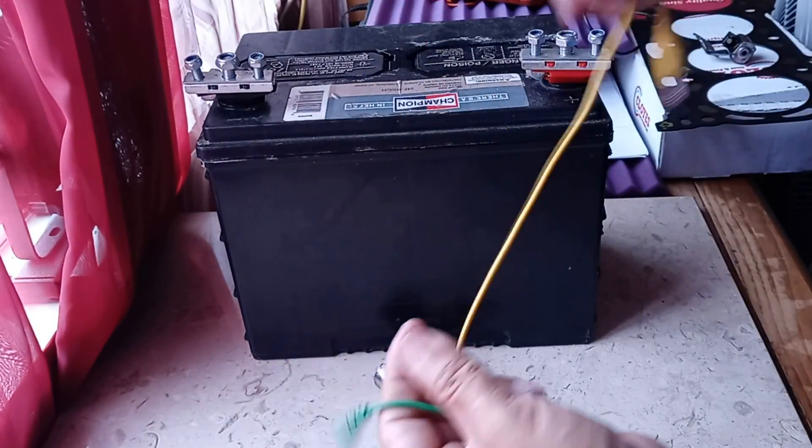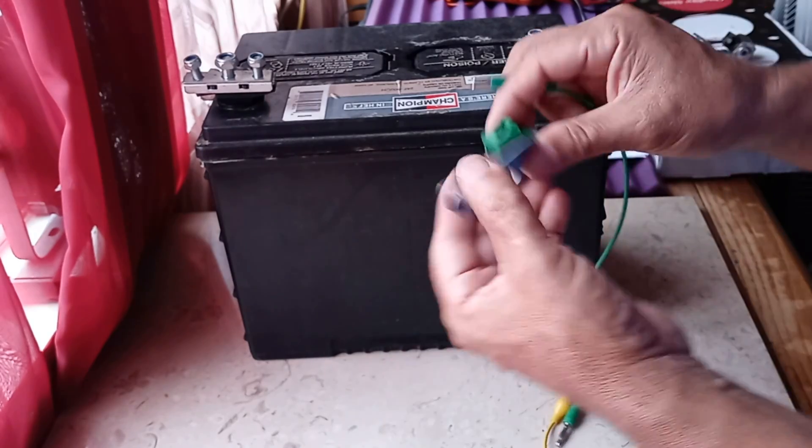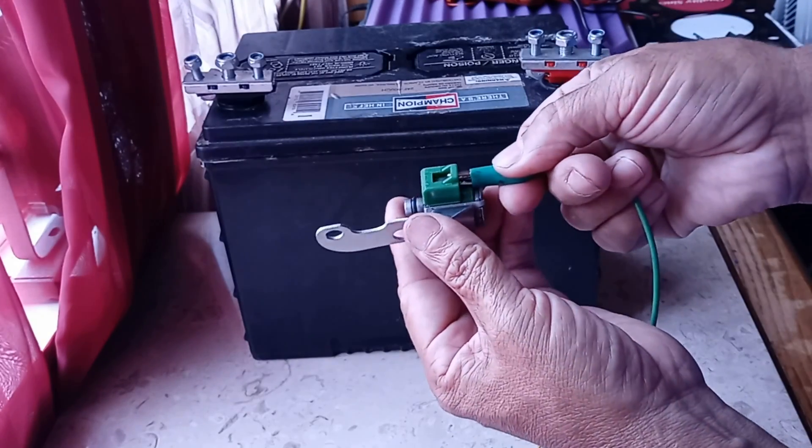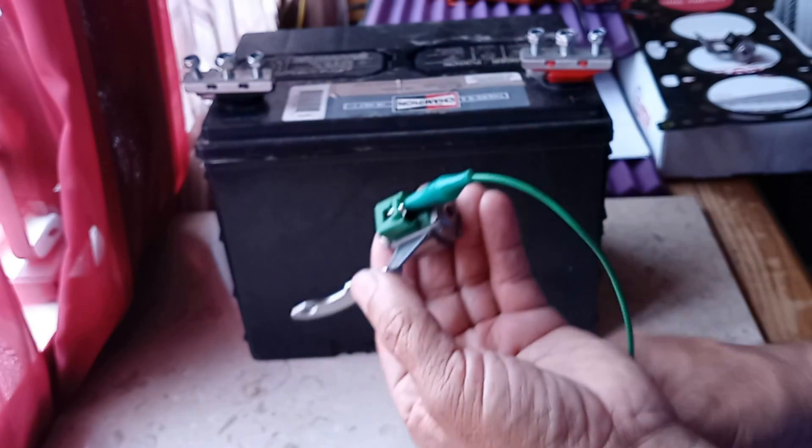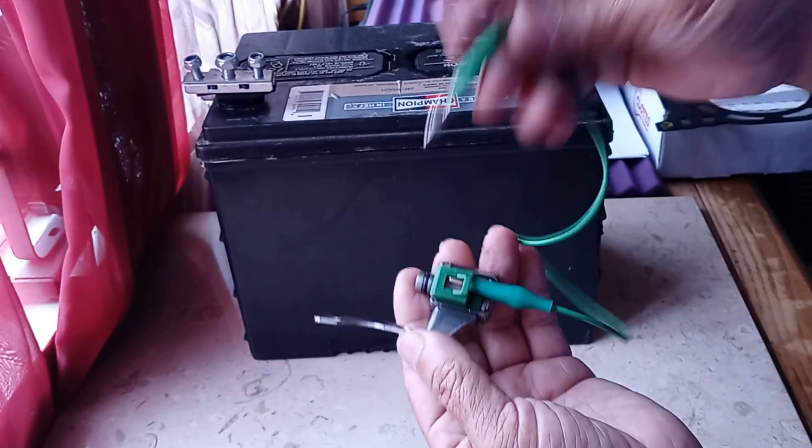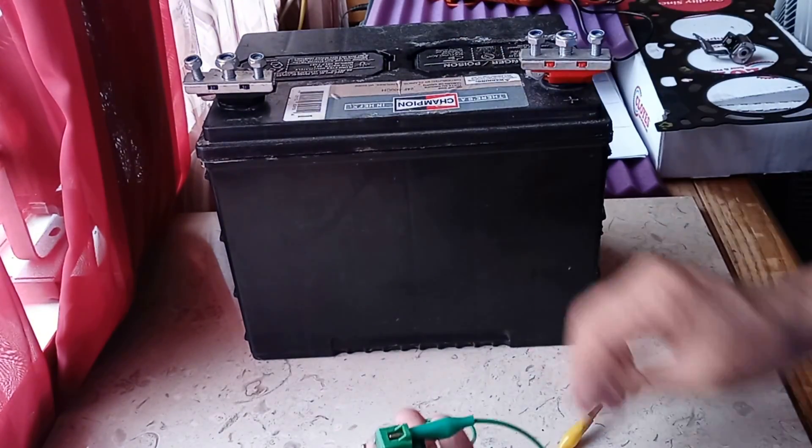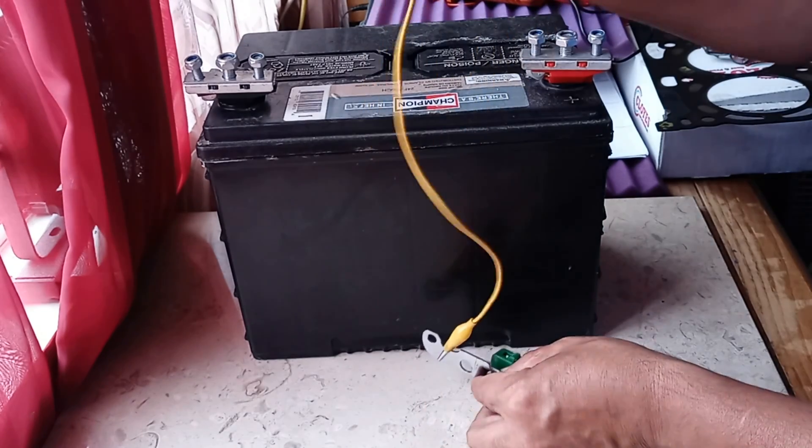Okay, get the two wires here, small wires. You don't even need a fancy tester. We're going to connect it right here on the connector of the shift solenoid, and this is going to go to the positive. Now, this is the thing.